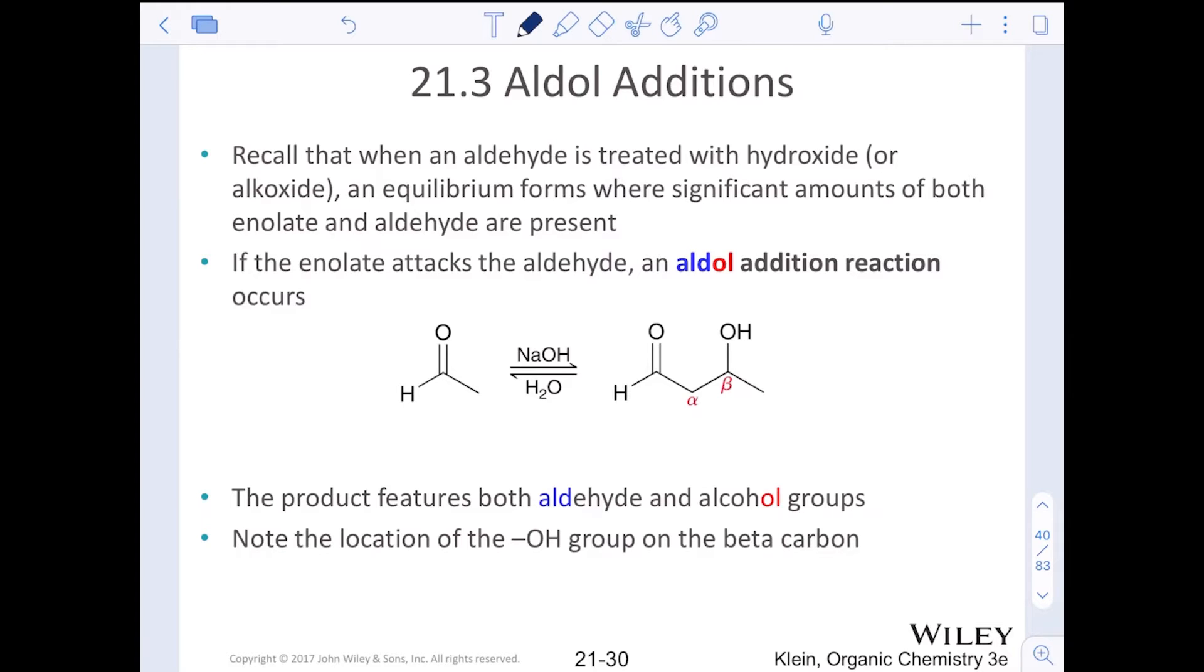We're doing that because both the enolate and aldehyde are present. We want two equivalents of our aldehyde to react, one in the enolate form and the other in the aldehyde form. We create a new alpha beta bond in this reaction, and at this point we'll see that it is a beta hydroxy aldehyde.